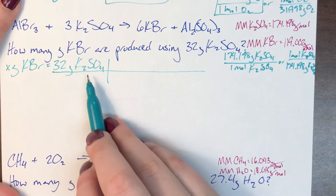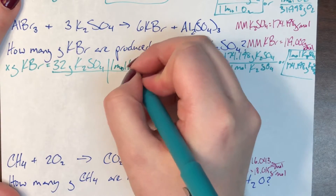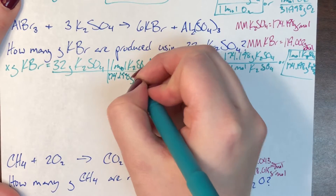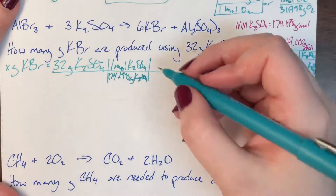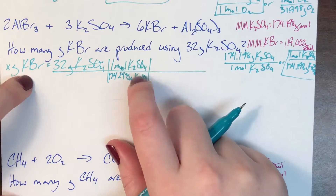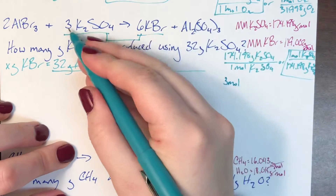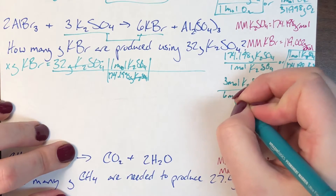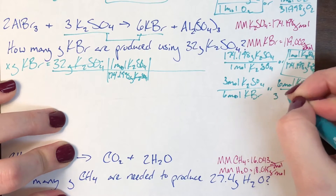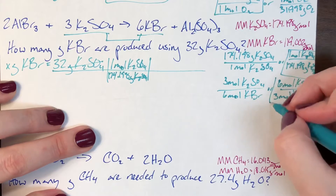I need grams of potassium sulfate at the bottom to cancel it, so I write 1 mole on top and 174.198 grams on the bottom. Grams of potassium sulfate cancel, leaving moles of potassium sulfate. Now I need a mole-to-mole ratio between potassium sulfate and potassium bromide. For every 3 moles of potassium sulfate there are 6 moles of potassium bromide, or for every 6 moles of potassium bromide there are 3 moles of potassium sulfate. I pick the version that cancels moles of potassium sulfate.